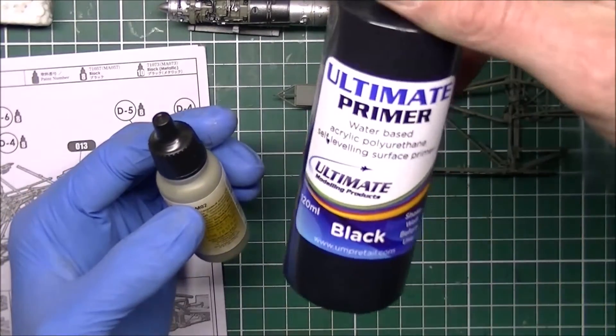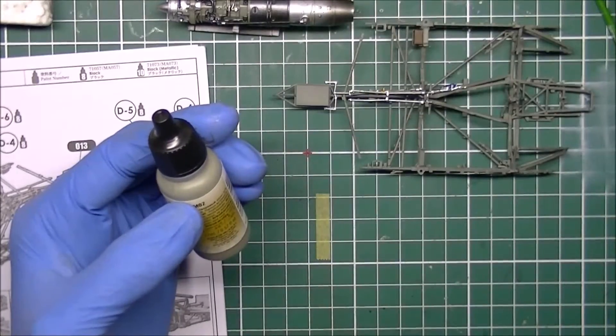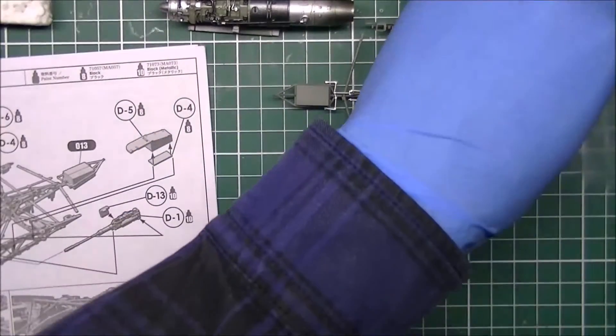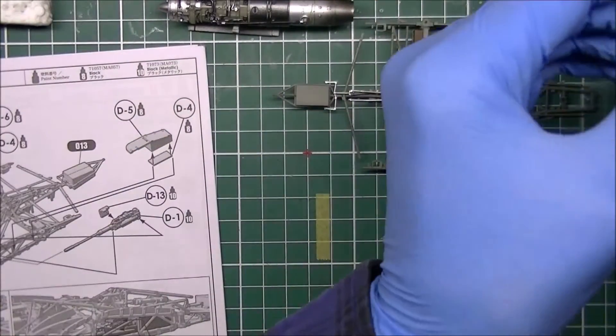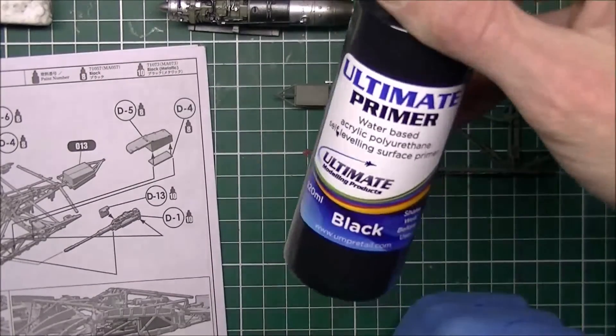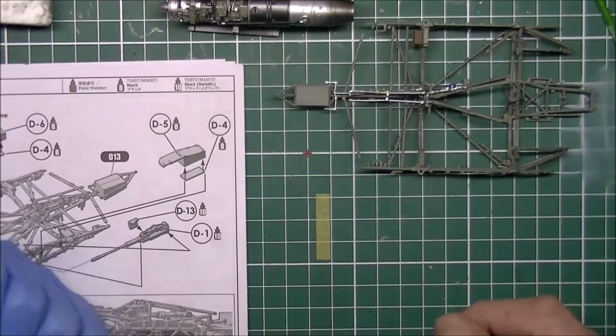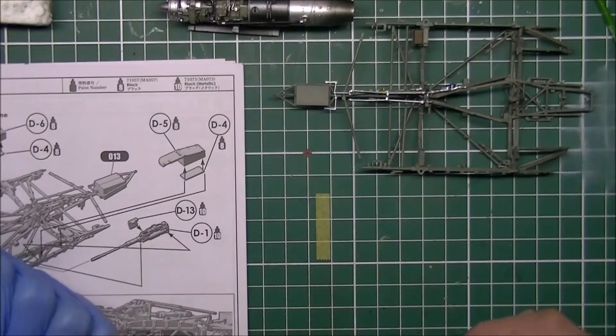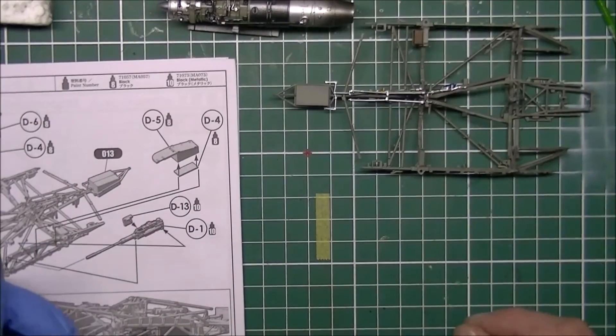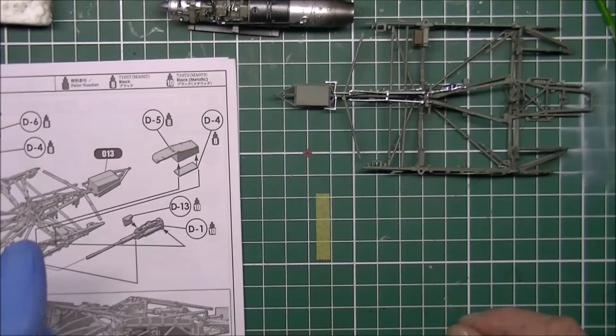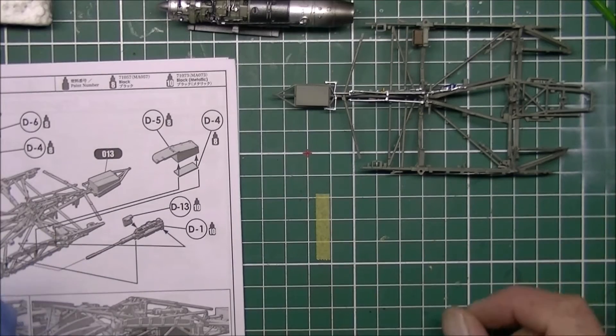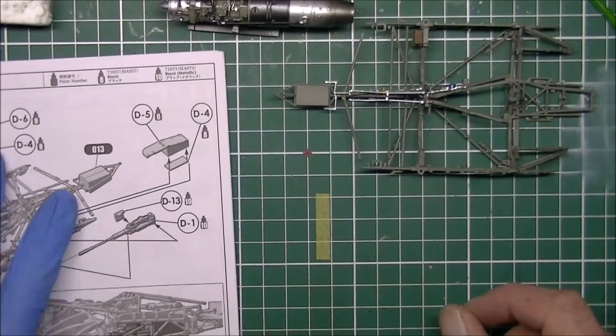This can be sprayed over quicker than the Vallejo stuff but in terms of doing an actual priming job I don't really have a preference. I'm just gonna use this on cockpits and stuff like that and use my Vallejo primer for larger areas with less detail. And that's it really for this update. I don't think update videos should be very long.